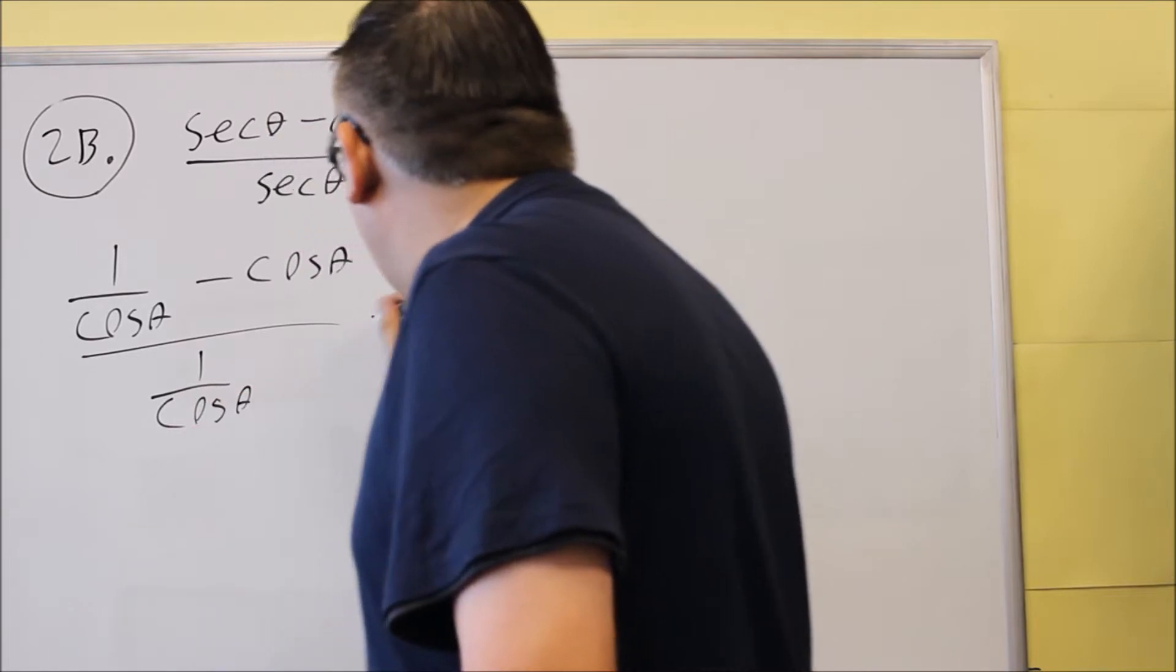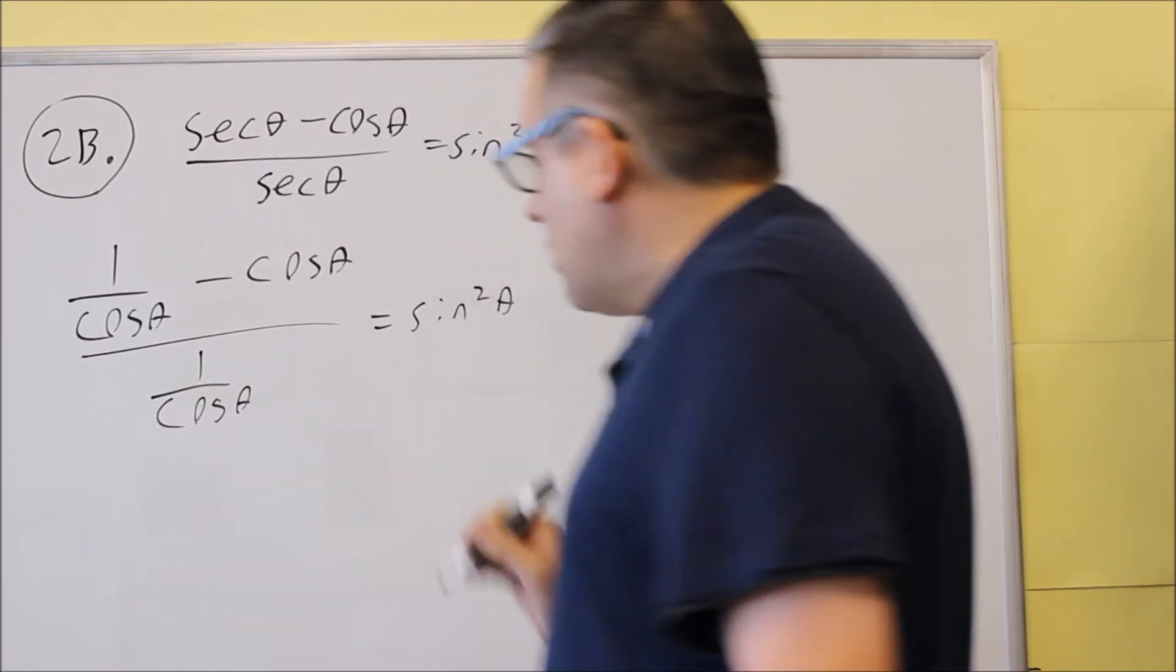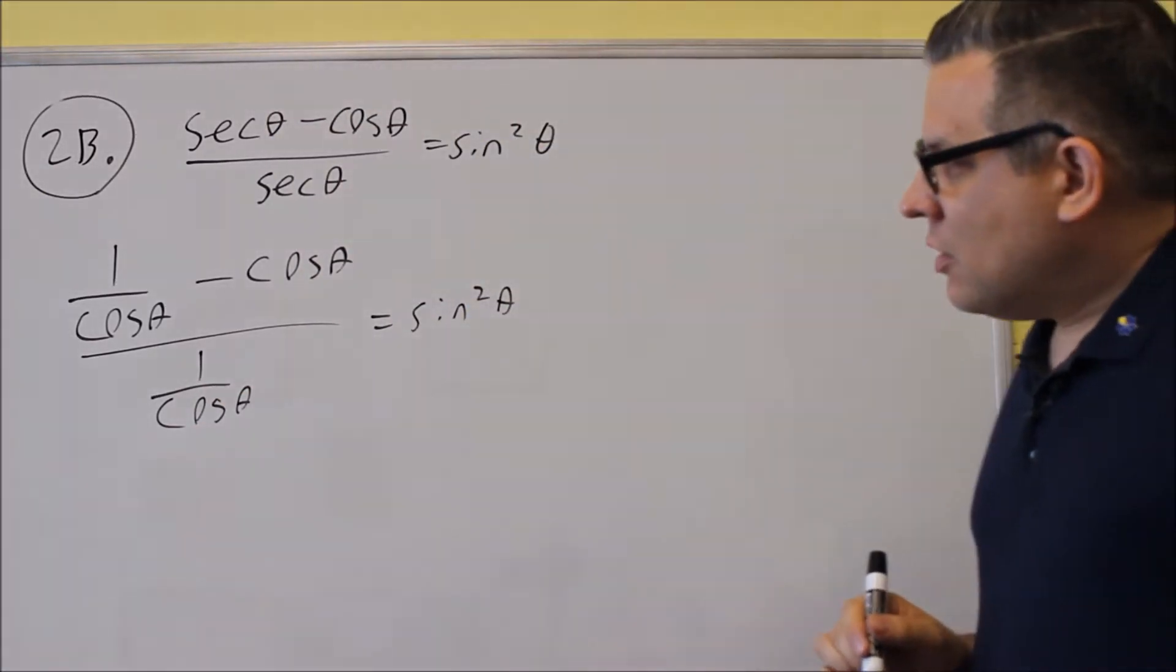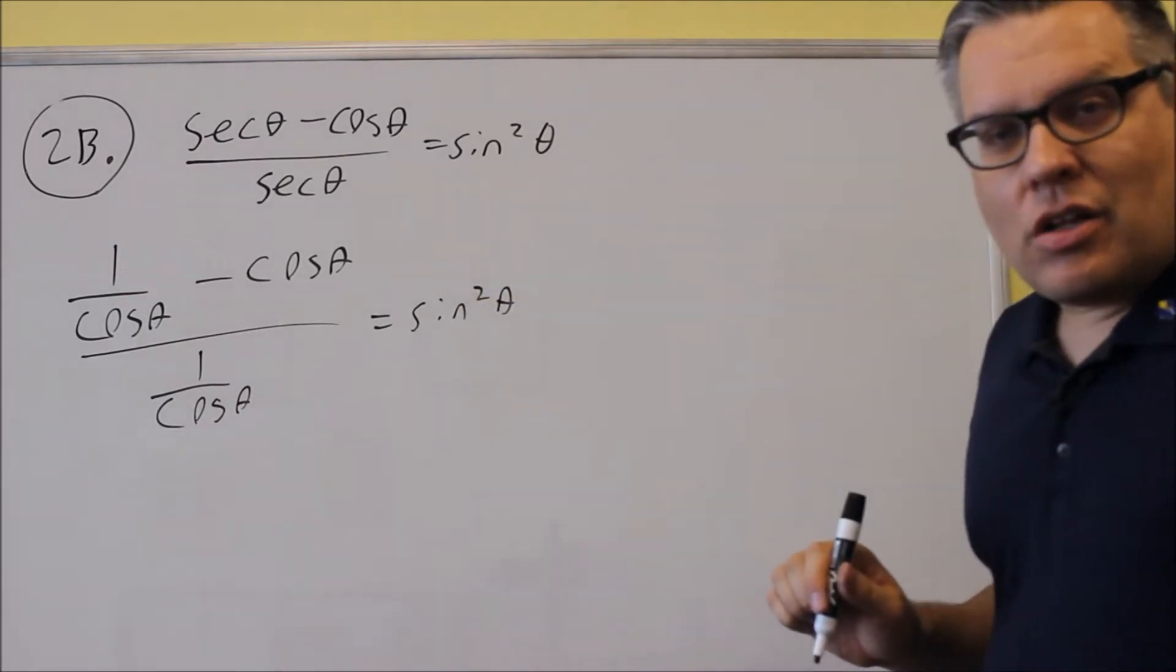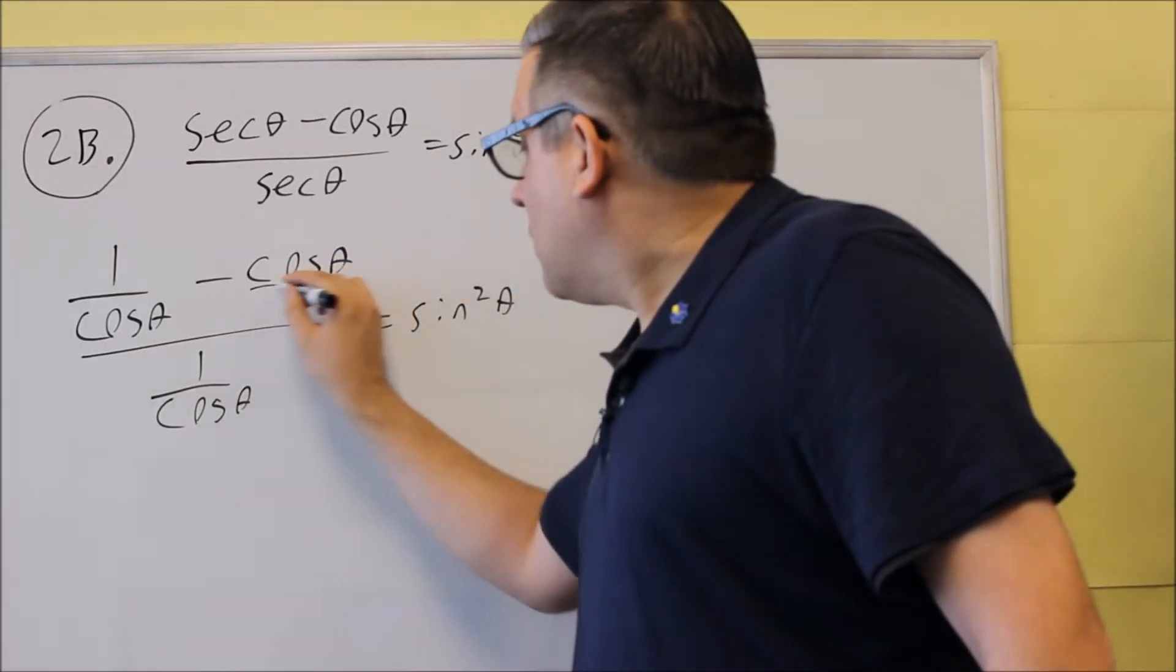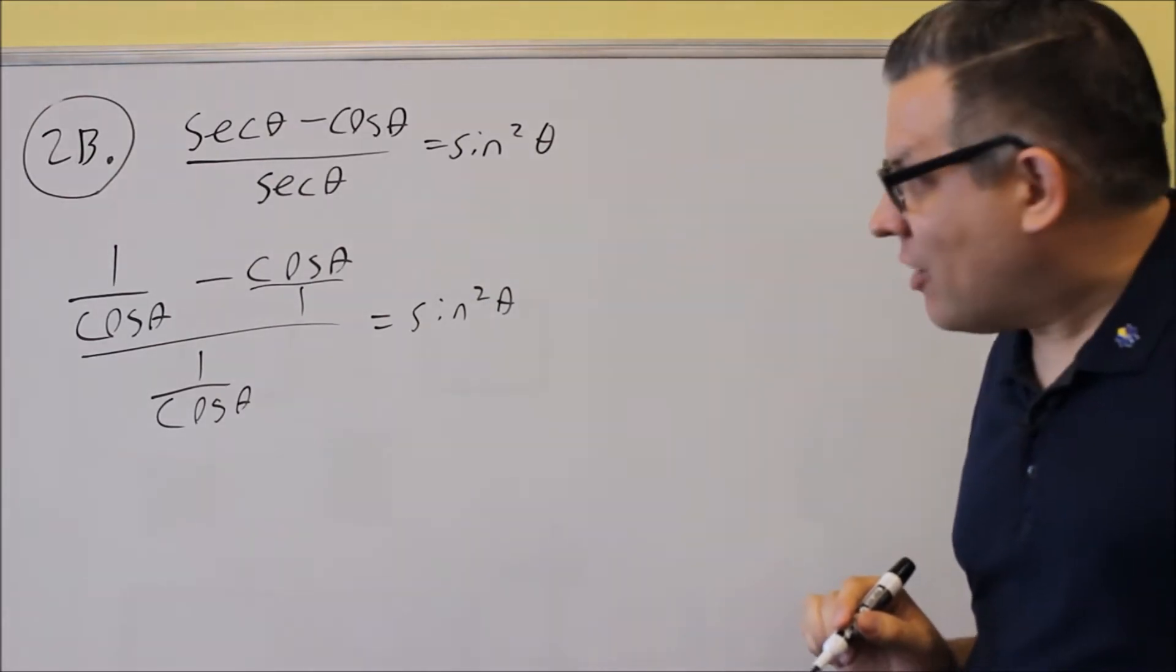So we have that, and that's got to eventually equal sine squared. What you always want to do is get common denominators on this, so in this case that's just cosine by itself,